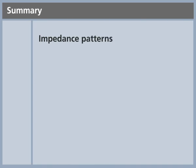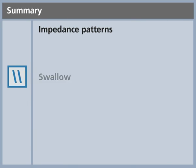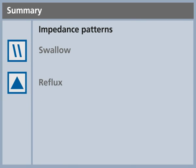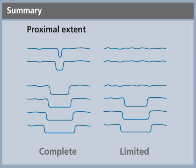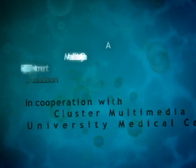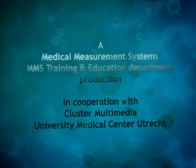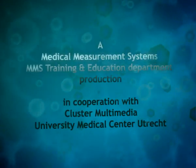These are the impedance patterns: a swallow, a reflux episode reaching the proximal esophagus, a reflux episode with a limited proximal extent, and a gas reflux episode. The shape of the impedance pattern informs us of the proximal extent of the reflux episode. The next step will be the impedance pH examination procedure. Thank you.